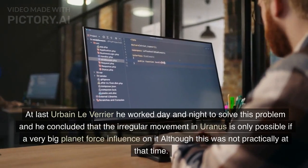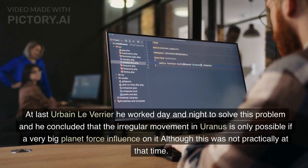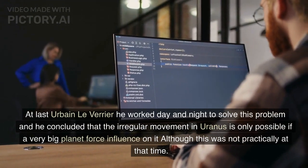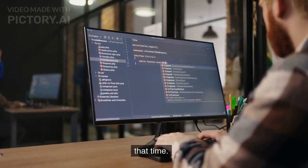At last, Urban Leveria worked day and night to solve this problem and concluded that the irregular movement in Uranus is only possible if a very big planet's force influences it, although this was not practically verifiable at that time.